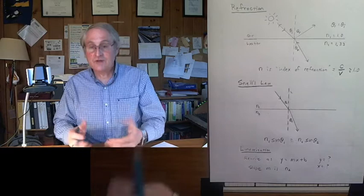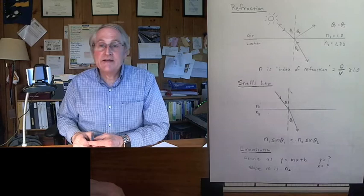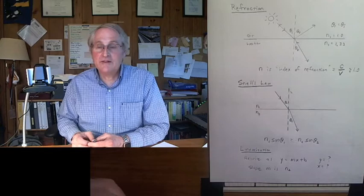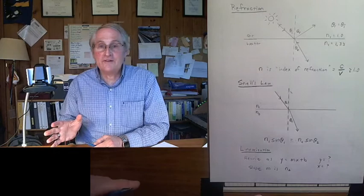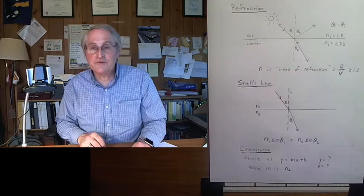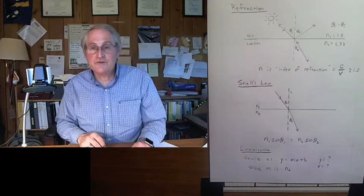So that all comes out from logger pro, which gives you the uncertainty. And once we have the index of refraction of the glass, we have a hope of figuring out what kind of glass it is, because I'm not going to tell you what kind of glass it is. There are all various kinds of glasses, and different kinds of glass have different values for the index of refraction. So what you'll want to do is go and find out what kind of glass has an index of refraction that is close to what we've measured.